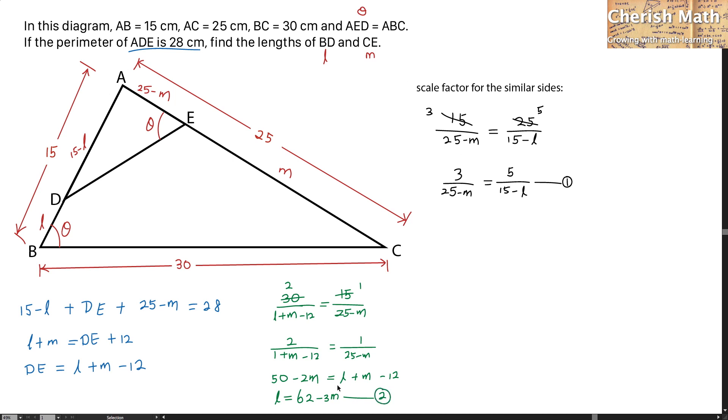Now I'm going to substitute equation 2 into equation 1. This is what is going to be 3 divided by 25 minus M equals 5 divided by 15 minus the value of L taken from the second equation, which is 62 minus 3M.